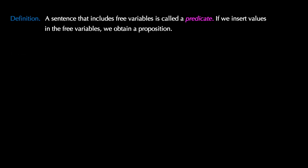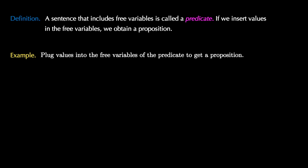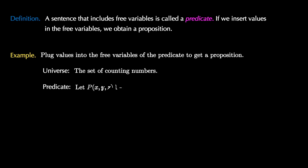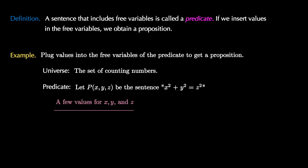To avoid having weird elements placed into our predicate, we often set a universe of discourse first for our predicate variables. In this particular example, let's set the universe to be the set of counting numbers, and then consider the predicate with 3 free variables given by the sentence x squared plus y squared equals z squared. Now let's consider a few triples of values for x, y, and z.